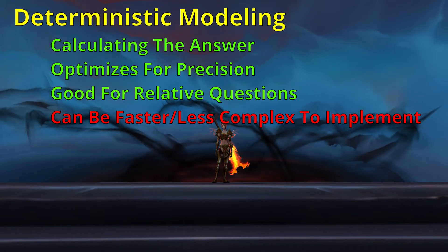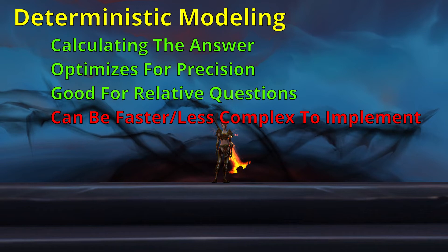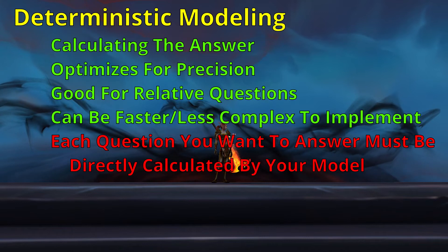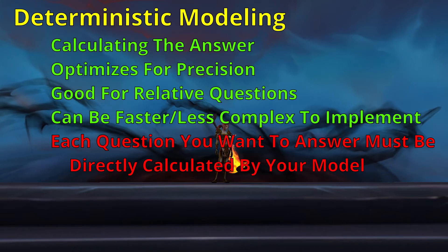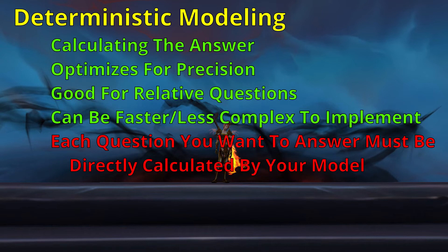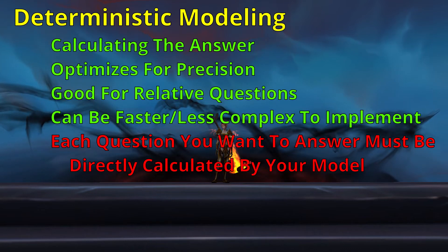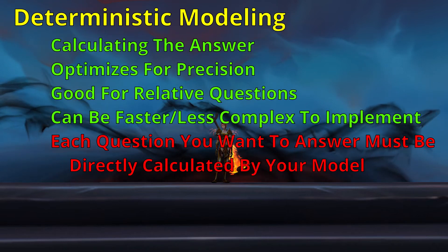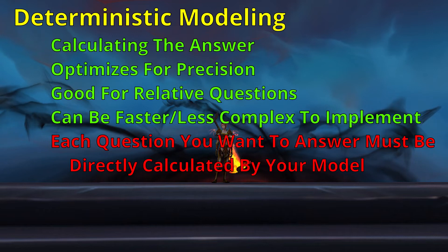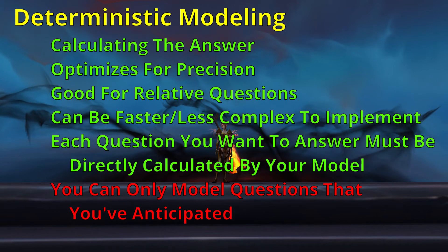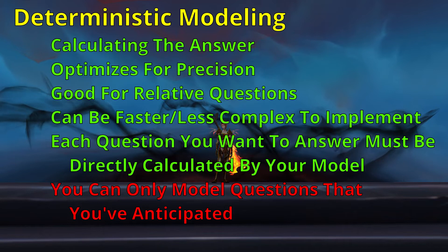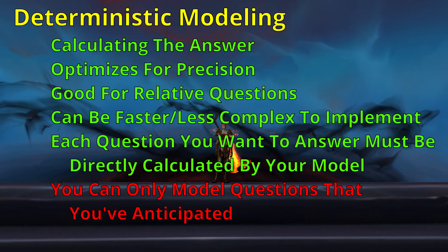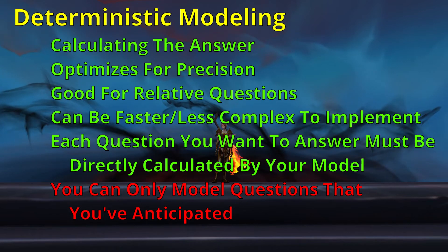Deterministic modeling is therefore an excellent choice when you have a single relative question that you want to ask — you can immediately jump into dealing with the variables you're actually interested in and get to that answer pretty quickly. However, each time you ask a different relative question, you essentially need to create a new tool or metric to answer that specific question. Therefore, if you're trying to ask a whole bunch of relative questions, you're either going to need to get really clever or you're going to have to do a whole bunch of work. Additionally, in order to do deterministic modeling, you must already know the question that you're trying to answer. This matters a lot if you're intending to share this tool with the general public, as it means you're going to have to anticipate the questions they're going to try to use the tool to answer.